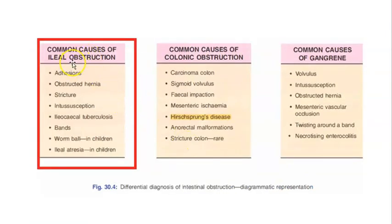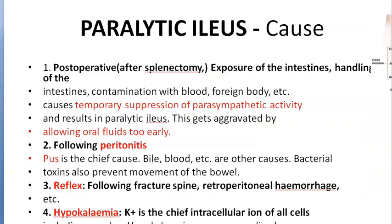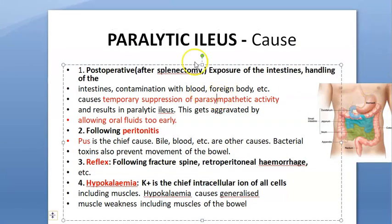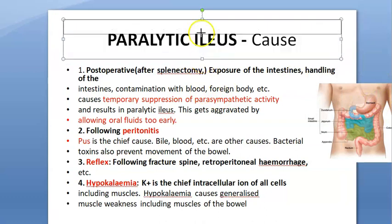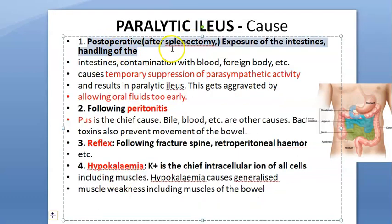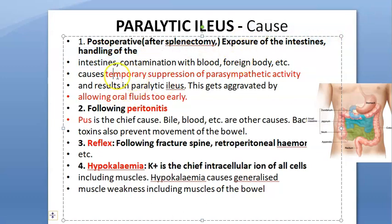There are many other causes of ileal obstruction such as adhesion, obstructed hernia, stricture, intussusception, ileocecal tuberculosis, bands, and worms — these are important differentials. As for causes of paralytic ileus specifically, the most common is post-operative: after surgeries like splenectomy where the intestines were exposed, handled, or contaminated by foreign bodies, causing temporary suppression of parasympathetic activity.